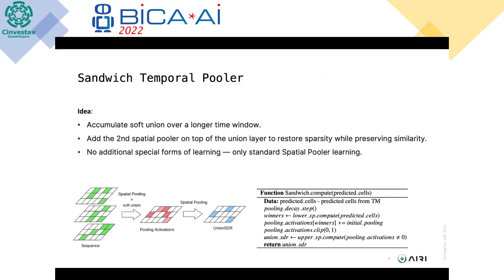Using these insights about the UTP learning rules, we propose another spatial-temporal processing algorithm called the Sandwich Temporal Pooler. It's called 'sandwich' because we wrap the union pooling layer with two spatial poolers. In UTP there is just one Spatial Pooler on the input; we add another to the output. This allows us to use longer time horizons for the union pooler to accumulate, with less decay, so it can accumulate information over longer parts of the input sequences.